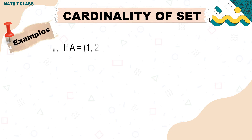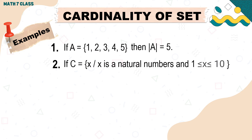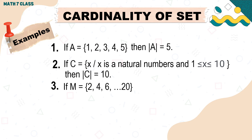First example: if set A is {1, 2, 3, 4, 5}, then the cardinality of set A is equal to 5, because there are five elements in set A. Next, if set C is a set of natural numbers from 1 to 10, then the cardinality of set C is equal to 10.